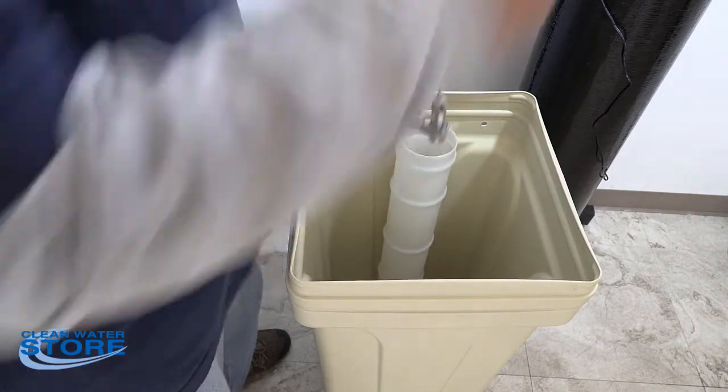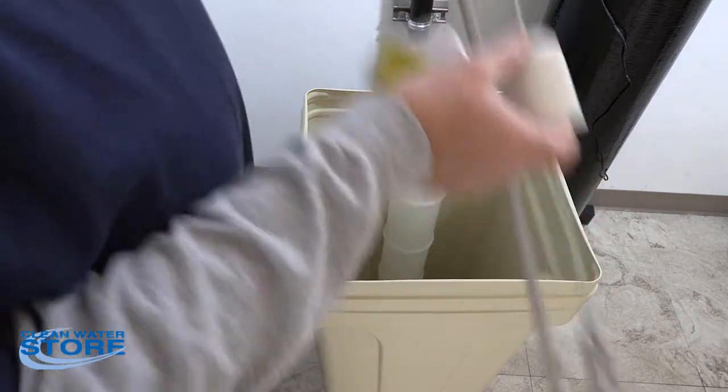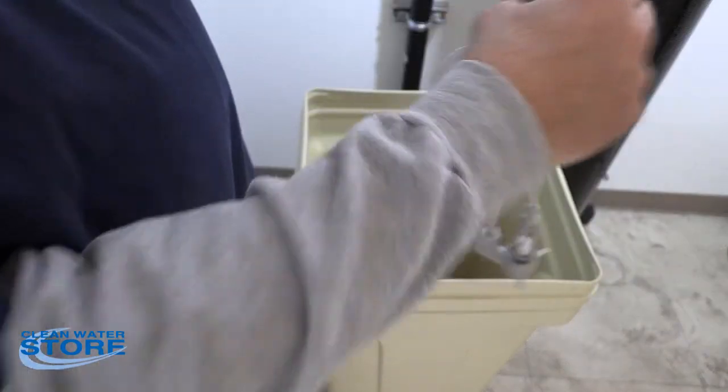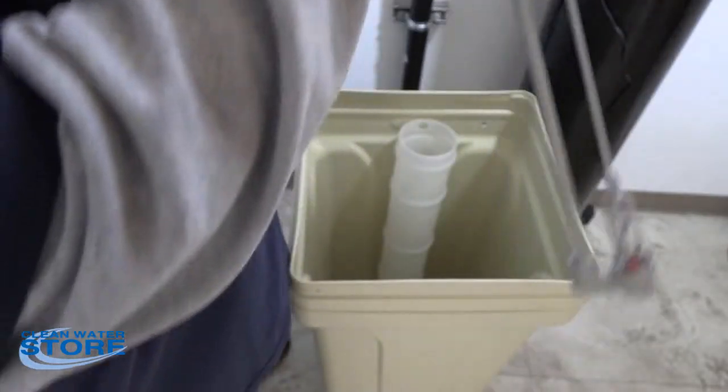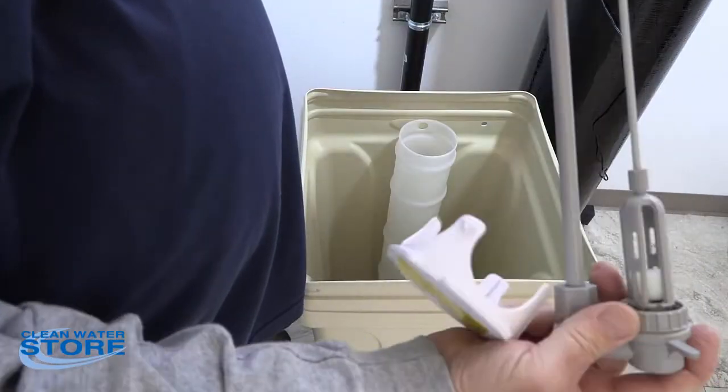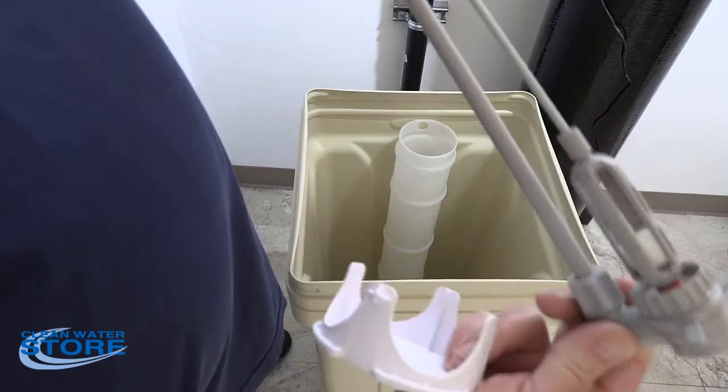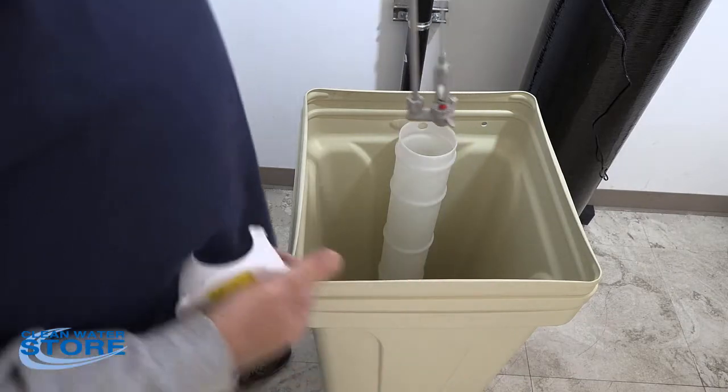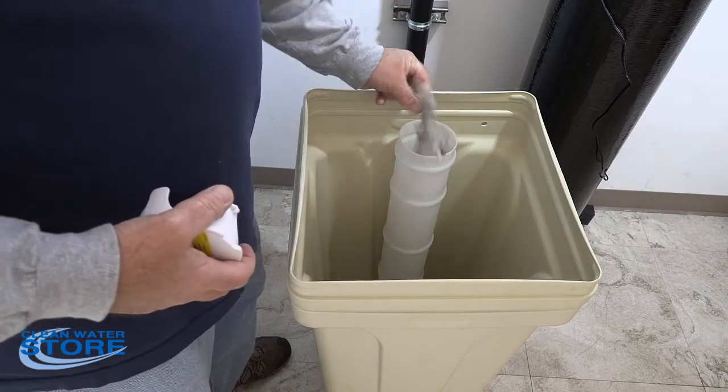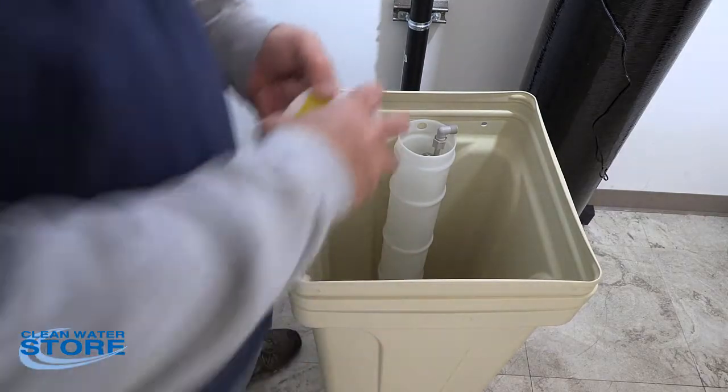Go ahead and pull your assembly out. This is a different type again. Your switch here, you want to make sure this is in the down position. The switch on this particular model is down here at the bottom. Make sure that's in the down position, and you can see the ball there. You want to make sure that's free and loose and doesn't have a bunch of debris in there.